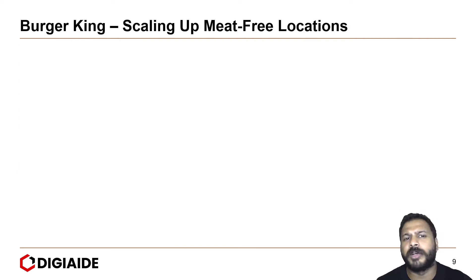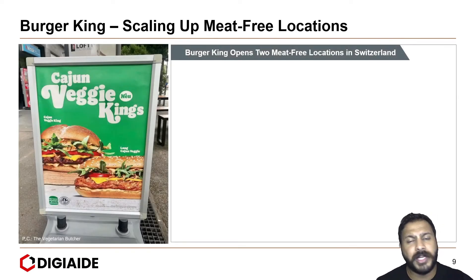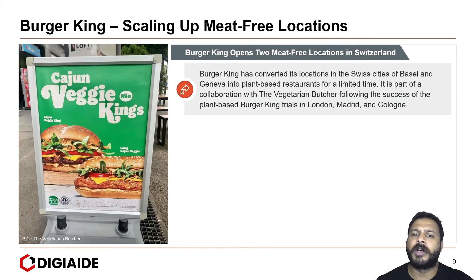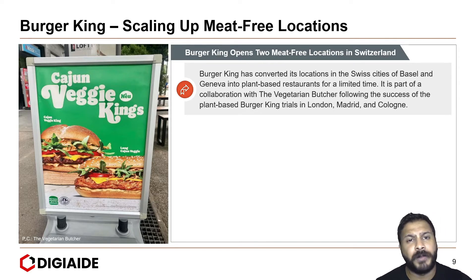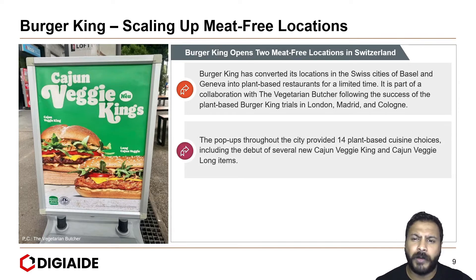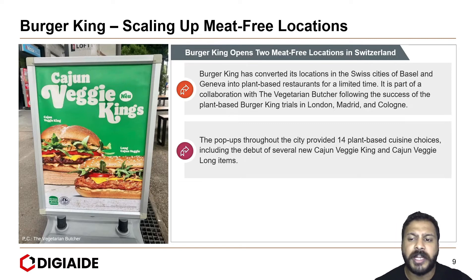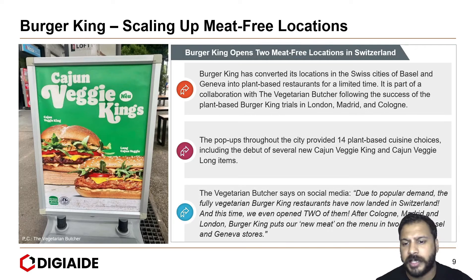Another case study of Burger King involves scaling up their meat-free locations. Burger King opened two meat-free locations in Switzerland, converting locations in Basel and Geneva into plant-based restaurants for a limited time, like a pop-up store. It is part of a collaboration with The Vegetarian Butcher, following the success of plant-based Burger King trials in London, Madrid, and Cologne. The pop-ups provided 14 plant-based cuisine choices, including new Cajon Veggie King and Cajon Veggie Long items. Due to popular demand, the full vegetarian burger restaurants have now landed in Switzerland.